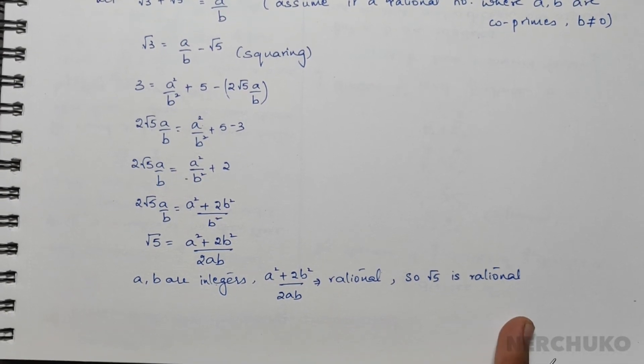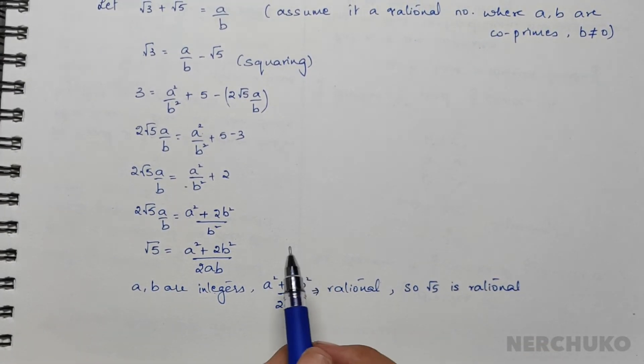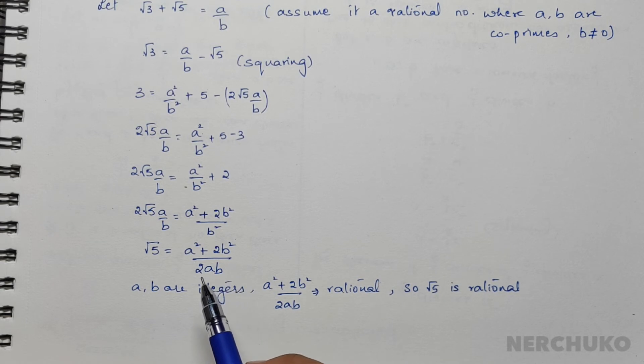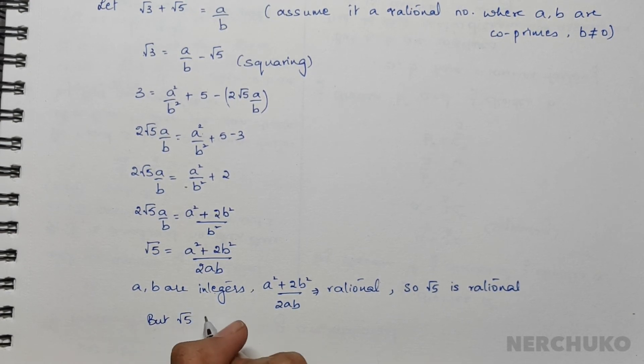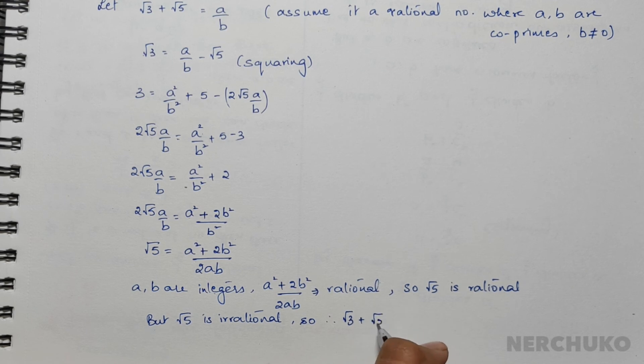But as I've already told you, we already know that √5 is an irrational number. Therefore, √3 + √5 is also irrational.